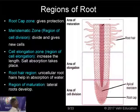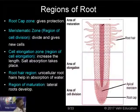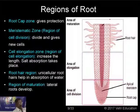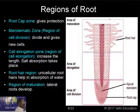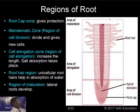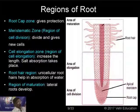You have to remember: the root hair region is very important for absorption of water, while the region of elongation is very important for absorption of mineral salts. Many people think both mineral salt absorption and water absorption take place from the root hair, but that is not the case. Water is absorbed from the root hair region, and minerals from the region of elongation. Beyond the area of maturation, lateral roots develop.